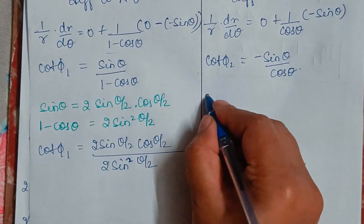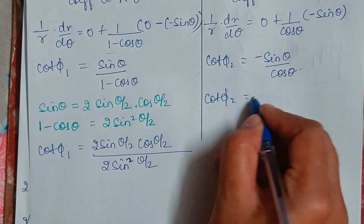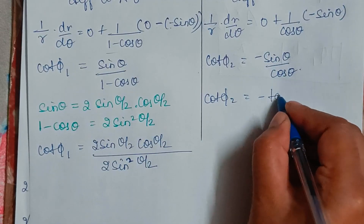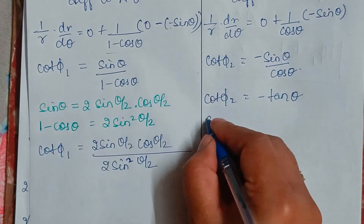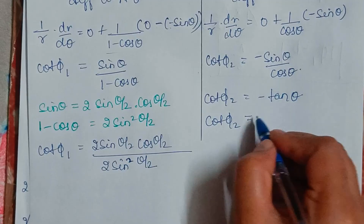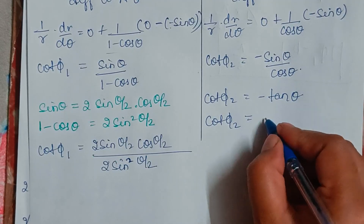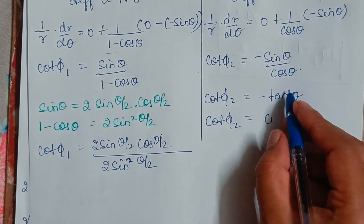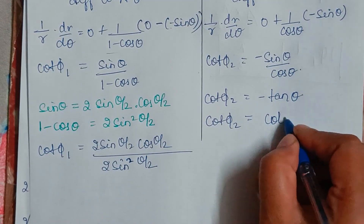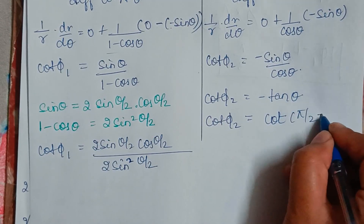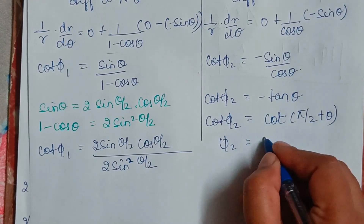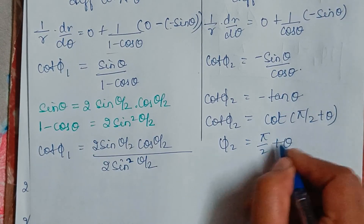For cot φ₂, sine over cosine is tangent, so cot φ₂ equals minus tan theta. Since this is negative, it falls in the second quadrant. So I can write it in the form of cot as cot(π/2 plus theta), meaning φ₂ equals π/2 plus theta.